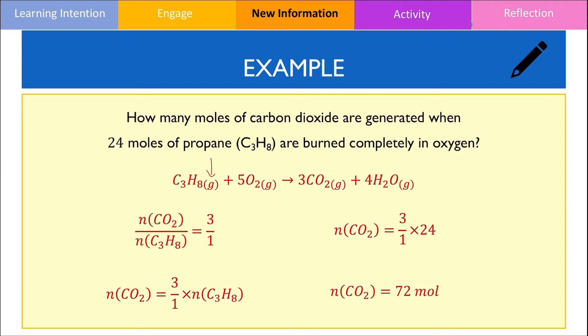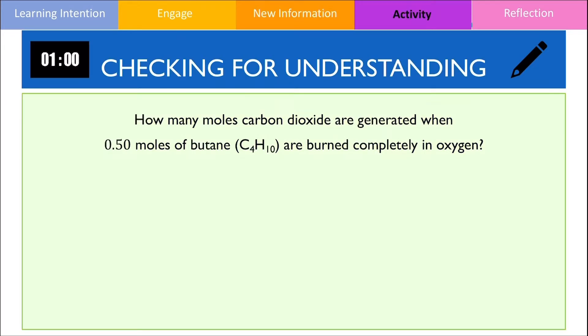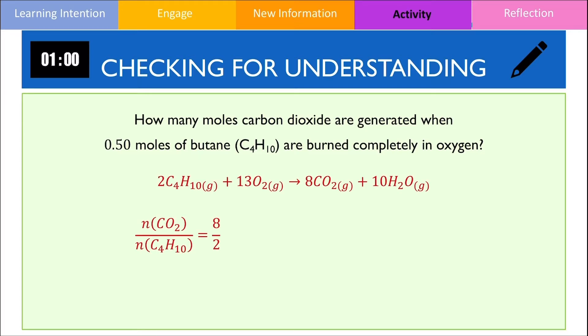I would now like you to have a go with a similar problem. Give yourself 1 minute to answer this question and resume this video when you're ready to review your answer. To start off, we write a balanced chemical equation for the combustion of butane, then set up a molar ratio to calculate the number of moles of carbon dioxide gas. The number of moles of carbon dioxide produced will be 4 times the number of moles of butane, giving an answer of 2 moles.